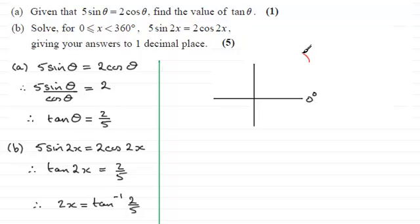Turning anti-clockwise is positive. Tangent is positive in the first quadrant and the third quadrant because we want a positive value. So we draw a line equally inclined to the horizontal, marking these two angles as being exactly the same. Starting from here, turning anti-clockwise to the first blue line, this is our first possible solution for 2x.